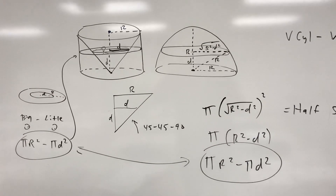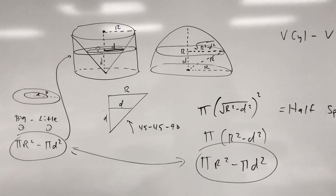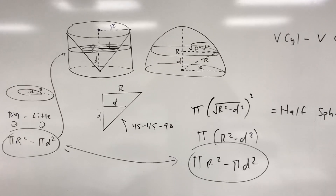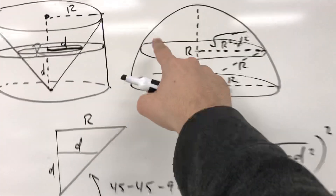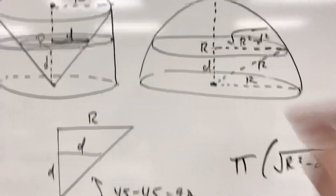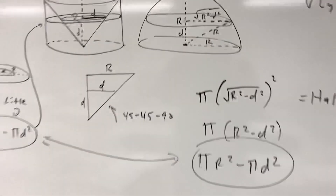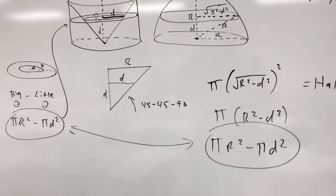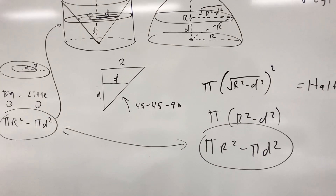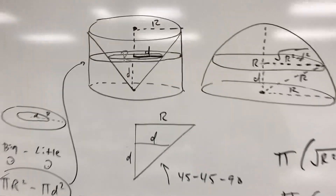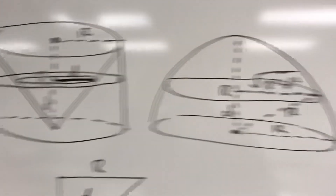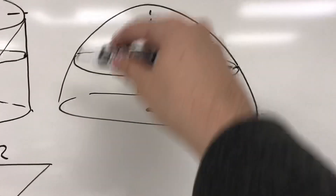So what you can see here is the ring at any height from the base is always going to be the same as the solid circle at any height from the base, with d representing the height you've moved up from the base. Cavalieri's principle says that this cylinder with a cone cut out will have the same volume as this hemisphere.